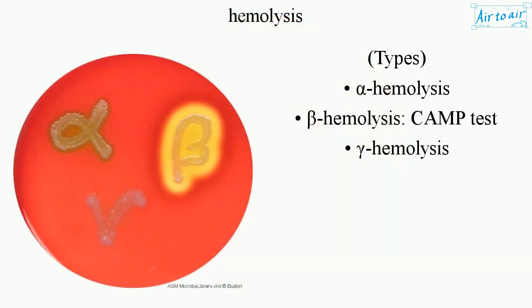The main types of hemolysis are: alpha hemolysis, beta hemolysis, the CAMP test, and gamma hemolysis.